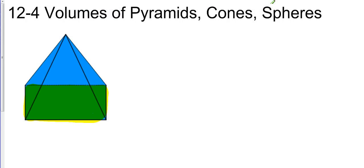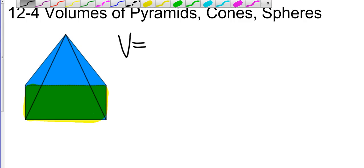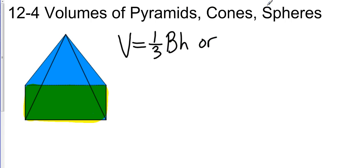Alright, volumes of pyramids, cones, and spheres. We're going to start first with a pyramid, and the volume of this pyramid is found by - excuse me - okay, volume of the pyramid is one-third the area of the base times the height.